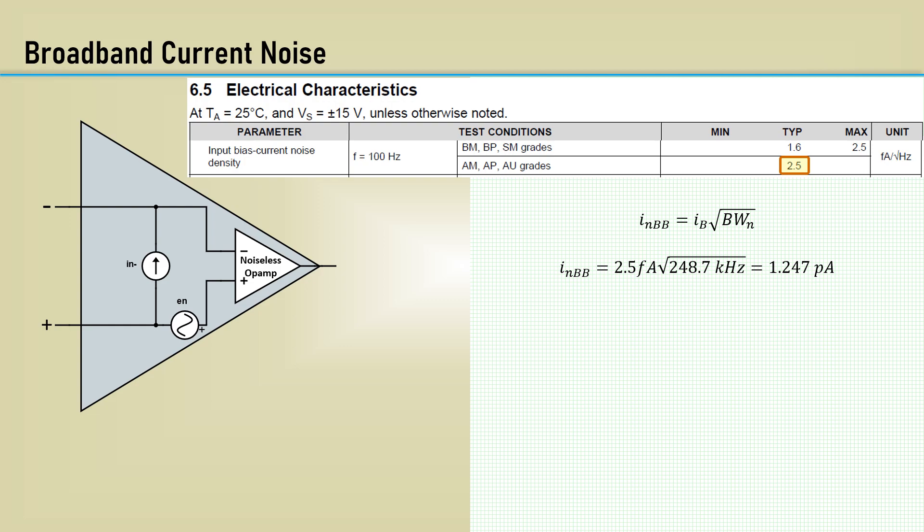The noise voltage generated is the broadband bias current density times the parallel combination of RF and R1, which is 990 ohms. You may remember this from the input bias cancelling resistor video using the parallel combination of the resistors. This yields 1.234 nanovolts RMS.